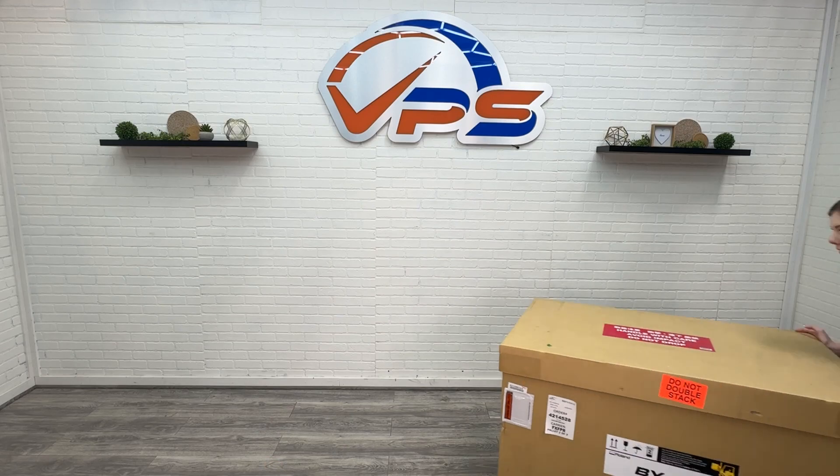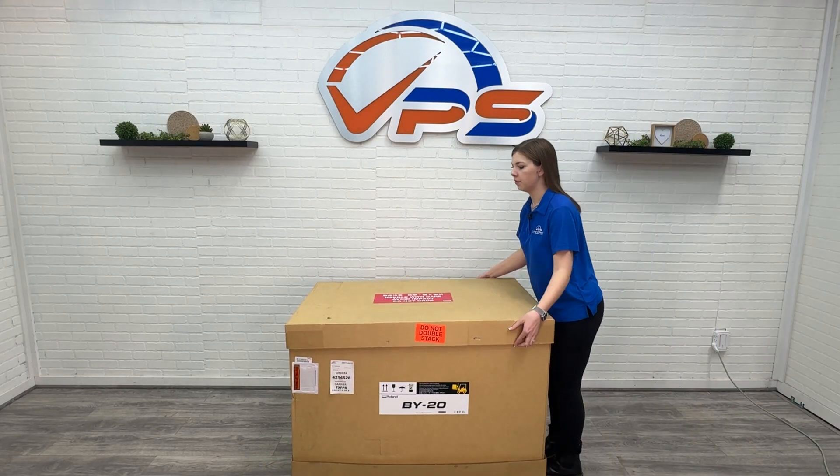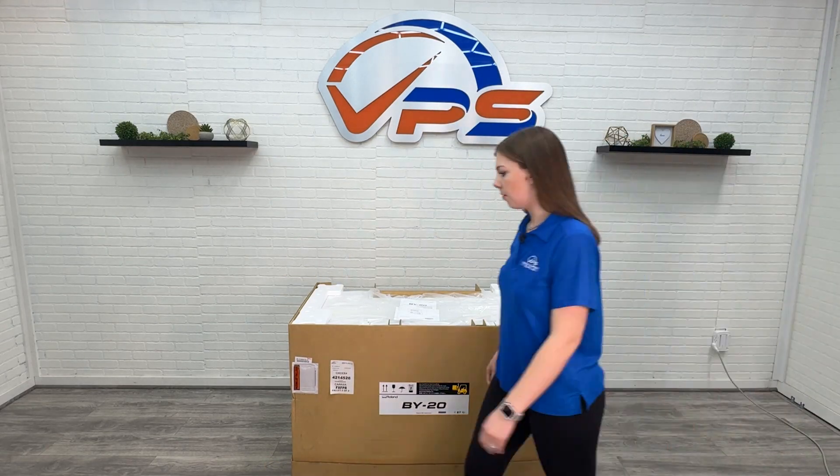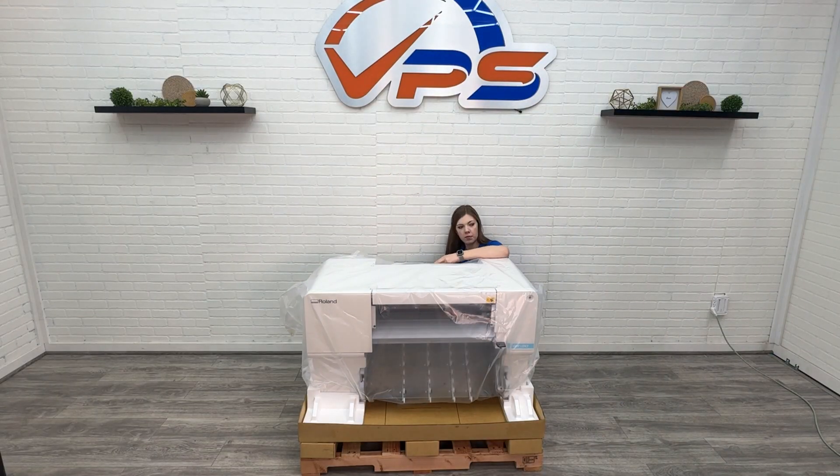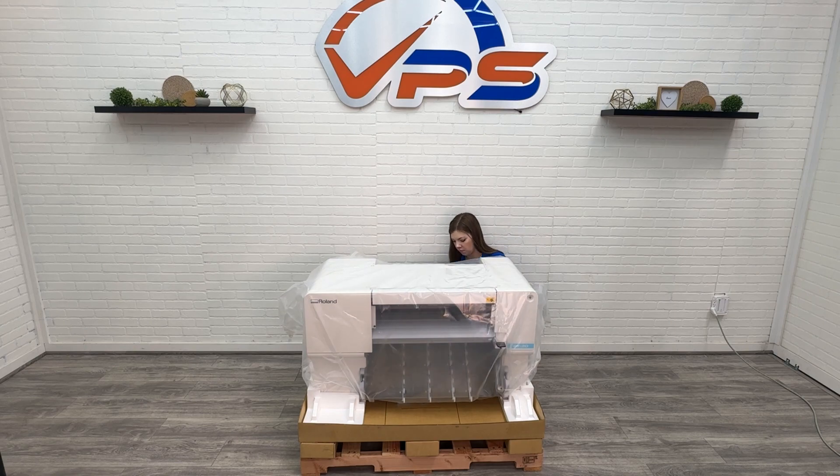The Roland BY-20 is the newer updated model of the BN-20D. It is twice as fast as the BN-20D, now printing up to 36 square feet an hour. This is an amazing machine for getting into DTF printing.